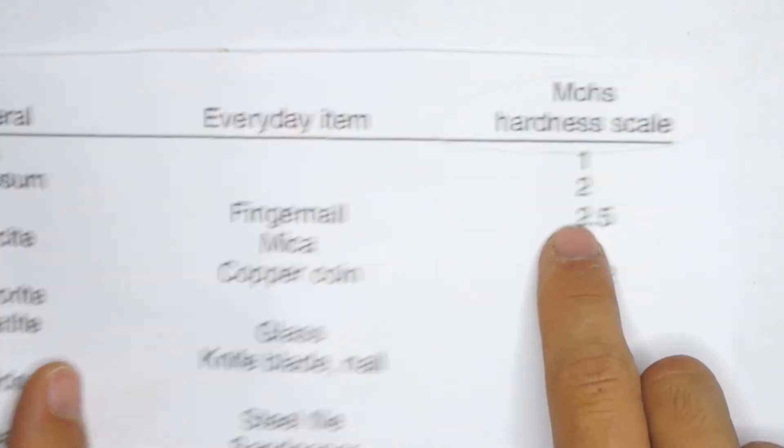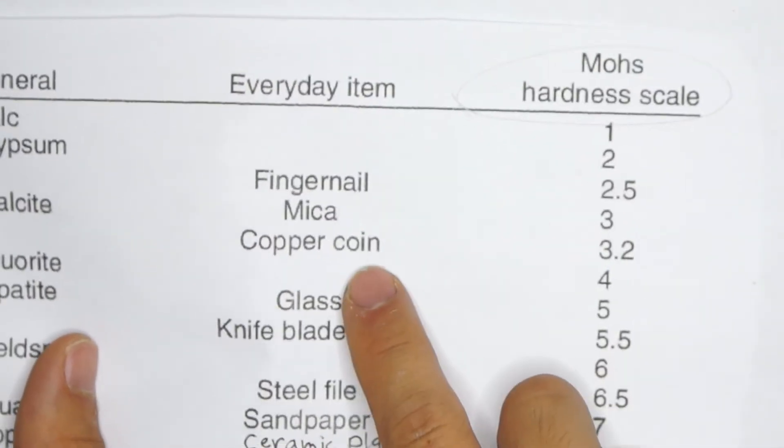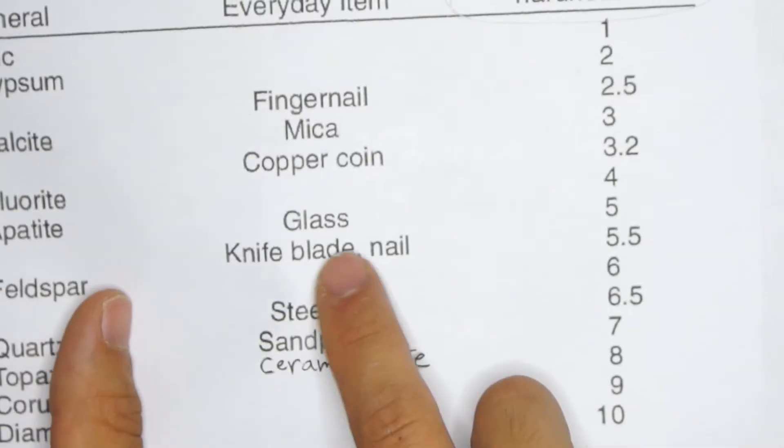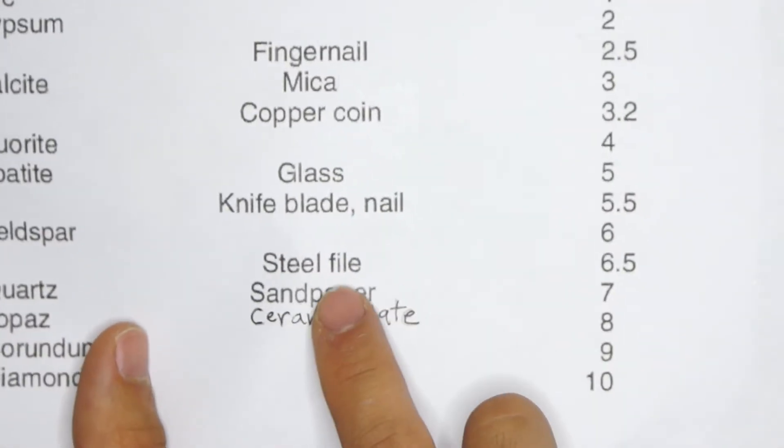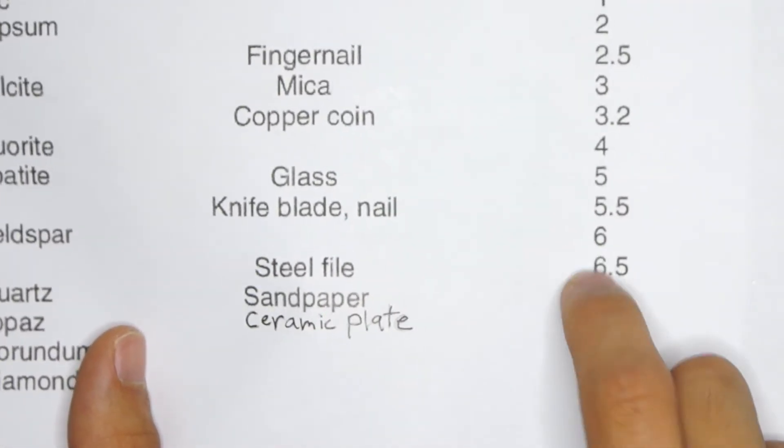Your fingernail has a hardness of 2.5, copper coin 3.2, glass 5, steel metal right around 6 to 6.5.